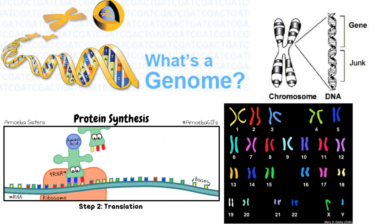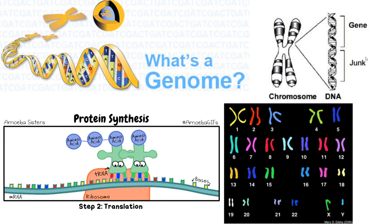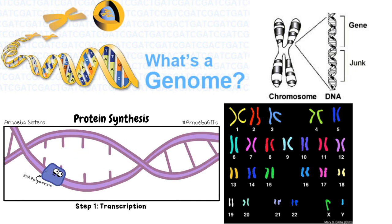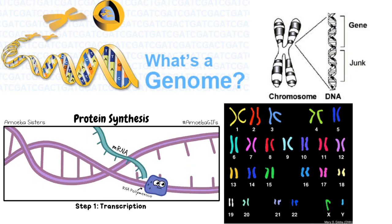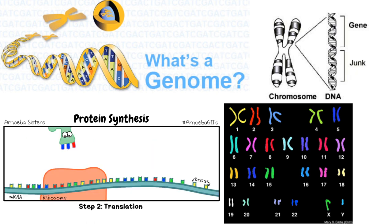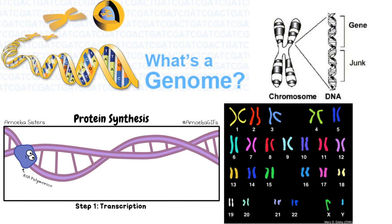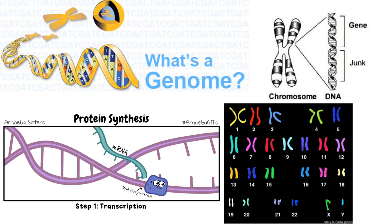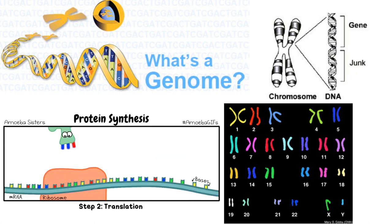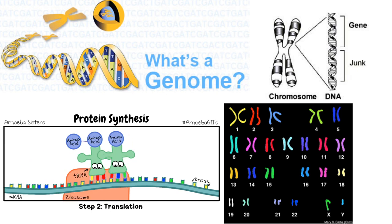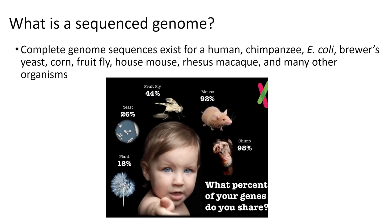Not all of our genome codes for things. Sometimes we have leftover information from previous ancestors called pseudogenes, or sections that may have originally coded for something but are no longer functional. We also have non-coding segments associated with gene regulation — not all genes need to be expressed at the same time, so non-coding sections turn some genes off and some genes on.